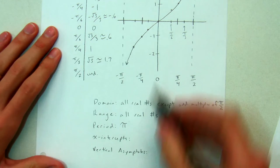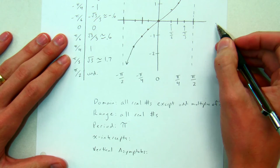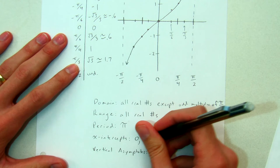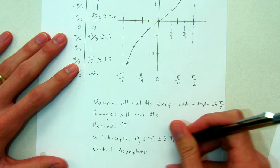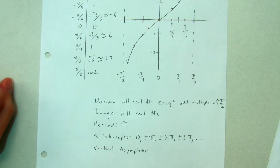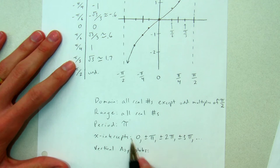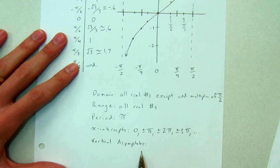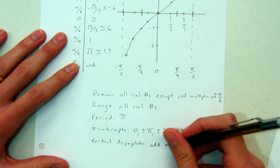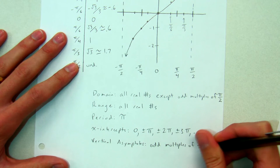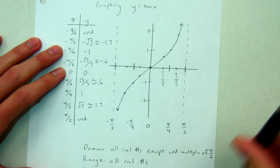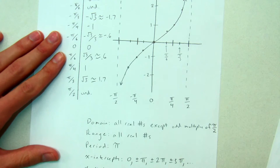The x-intercepts are where the graph crosses the x-axis. That happens at 0, and again at pi and at 2 pi, and going the other way at negative pi. So the x-intercepts are at 0, plus or minus pi, plus or minus 2 pi, plus or minus 3 pi, and so on — basically any integer multiple of pi. And lastly, the vertical asymptotes are at the same places where the domain doesn't exist: odd multiples of pi over 2. Wherever there was a hole in the domain, that hole exists because there's a vertical asymptote.